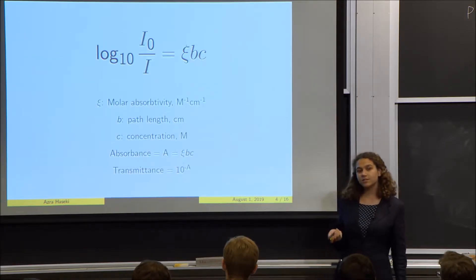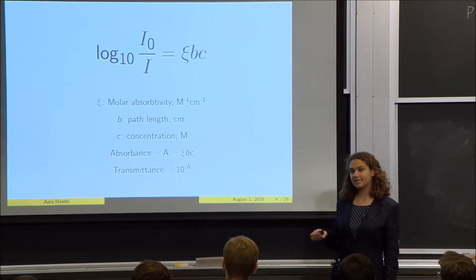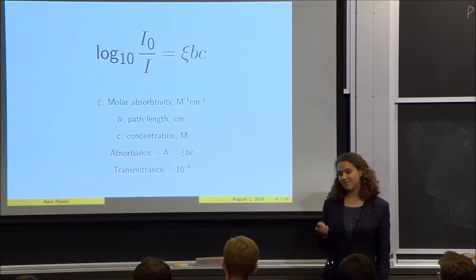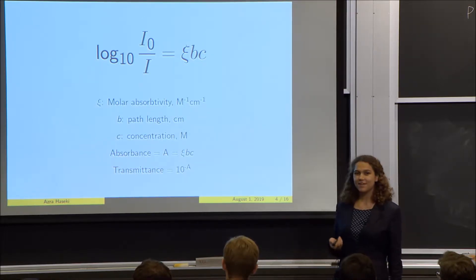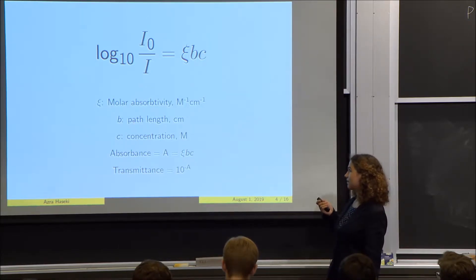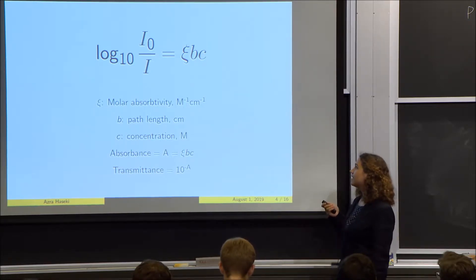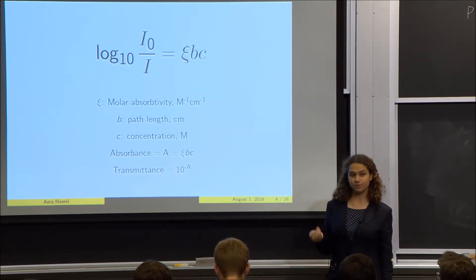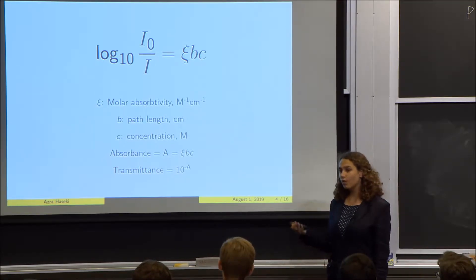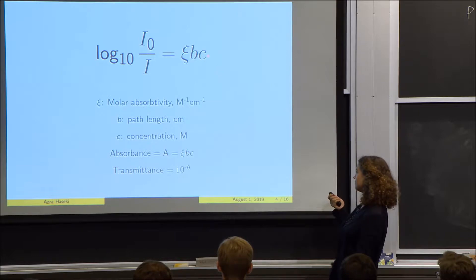When light travels through any medium, some of it gets scattered and some of it gets absorbed. The amount transmitted depends on a few things: the depth of the medium it travels through, the medium itself — expressed through the molar absorptivity constant — and the concentration of the medium.